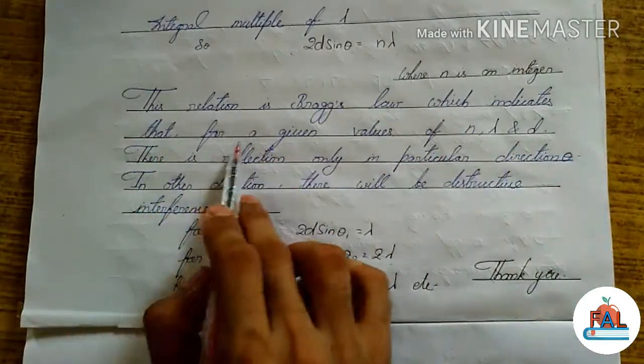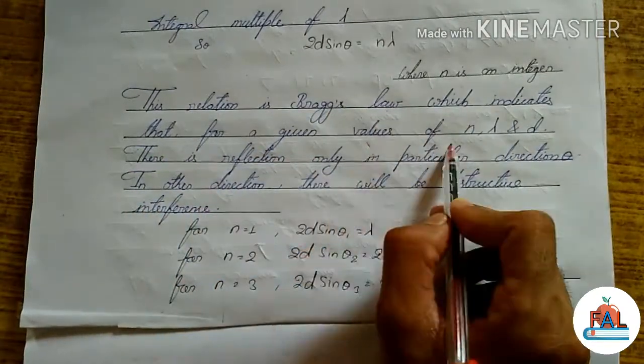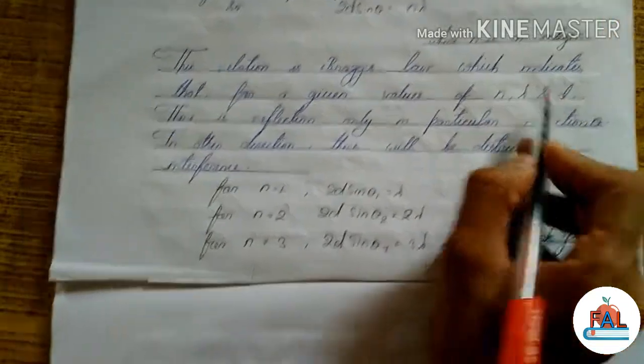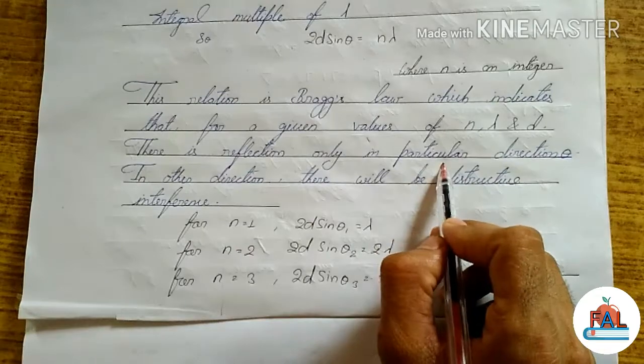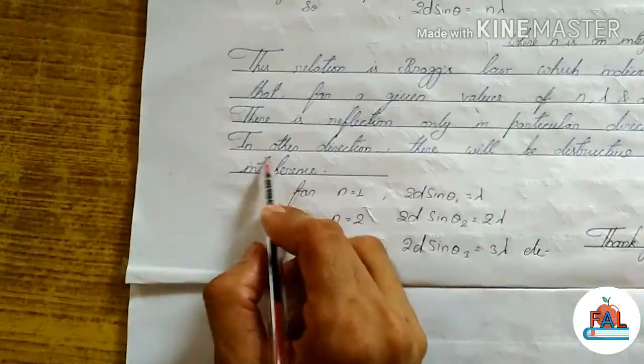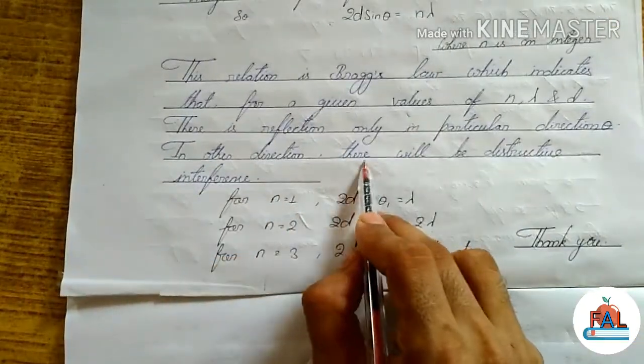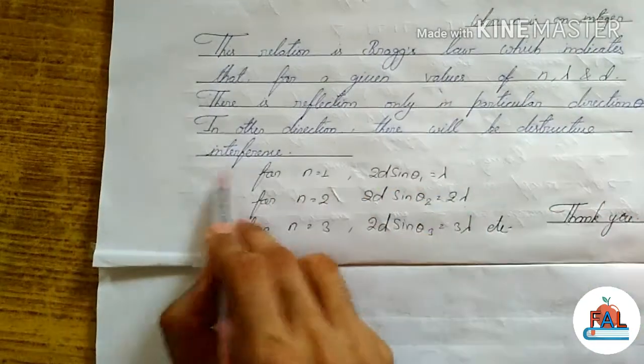This indicates that for given values of n, lambda and D, there is reflection only in a particular direction theta. In other directions, there will be destructive interference.